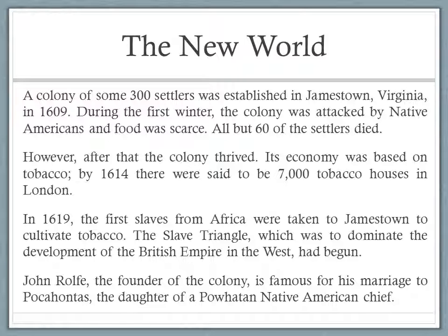We're beginning to see the things which would later become the British Empire — the slave trade, the shipment of goods like tobacco and of course sugar, and all kinds of other products which could not be grown in England. You've probably heard of Pocahontas — she was the wife of John Rolfe, the founder of the colony. He married a Native American woman and brought her back to London as well.